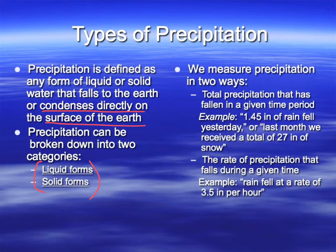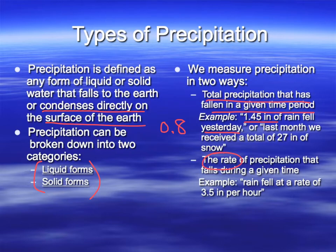You can measure precipitation in a couple of different ways. Total precipitation is the amount fallen over a given time period — for example, 0.8 inches of rain over two days. You can also give a rate. Rate of precipitation is important when talking about flooding, because rain can only soak into the ground at a particular rate. If precipitation falls faster than the ground can absorb, you're going to have serious flooding problems — so meteorologists will definitely be on the lookout for the rate at which severe storms drop rainfall.